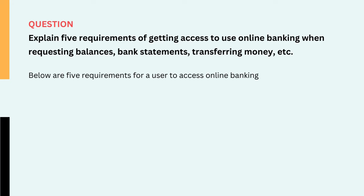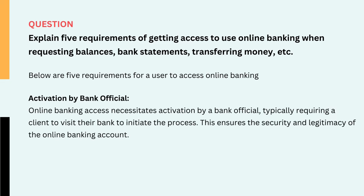Question: Explain five requirements of getting access to use online banking when requesting balances, bank statements, transferring money, etc. Below are five requirements for a user to access online banking. 1. Activation by bank official. Online banking access necessitates activation by a bank official, typically requiring a client to visit their bank to initiate the process. This ensures the security and legitimacy of the online banking account.